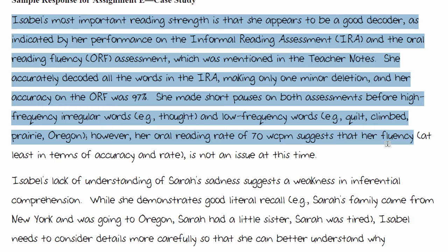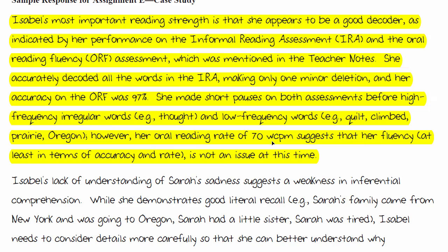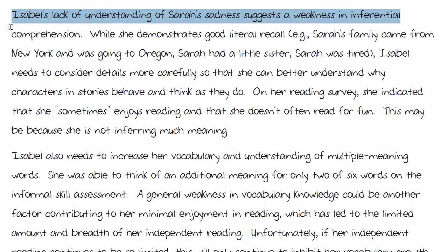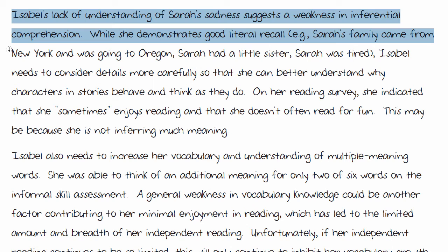She made short pauses on both assessments before high-frequency irregular words like 'thought' and low-frequency words like 'quit,' 'climbed,' 'Prairie,' and 'Oregon.' Her oral reading rate of 70 words per minute suggests that fluency, at least in terms of accuracy and rate, is not an issue at this time. Let's look at the second strength. Isabel's understanding of Sarah's sadness may reflect a weakness in inferential comprehension. I think I would have spent more time on her literal comprehension as a second strength, but they spend most of their time on two needs.